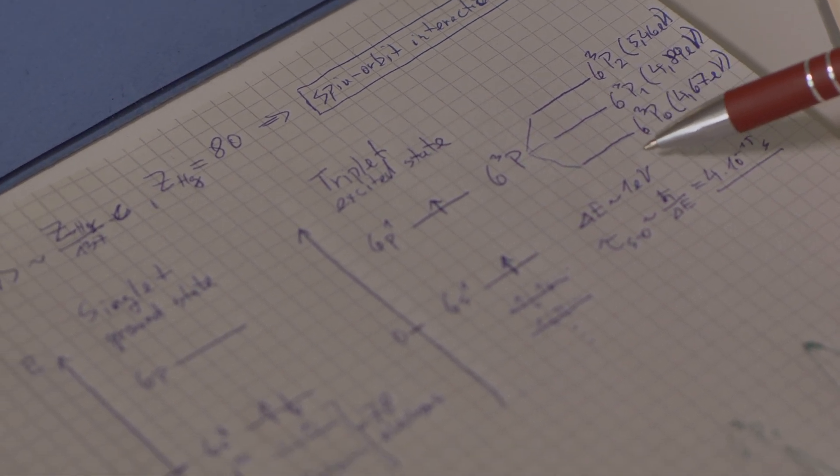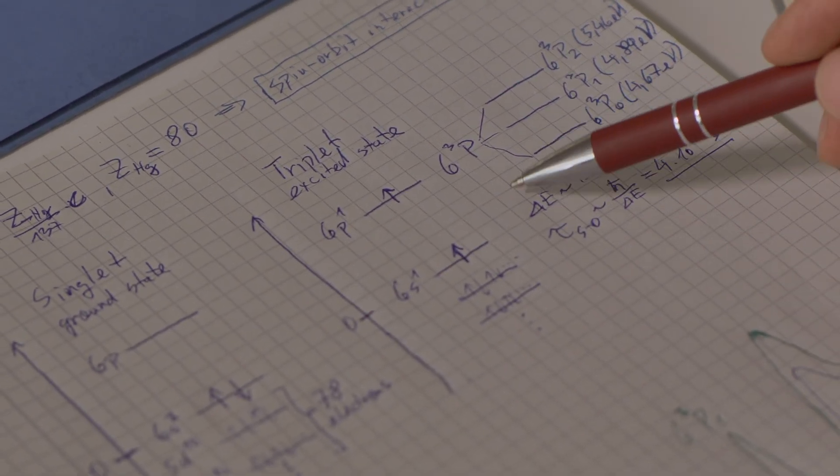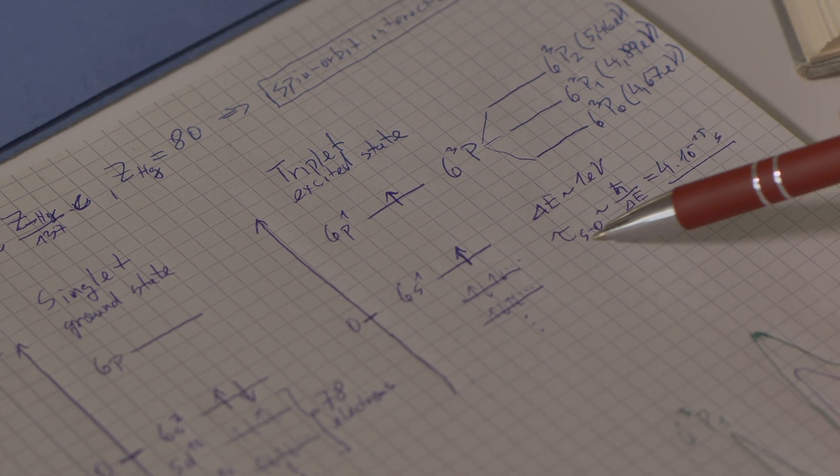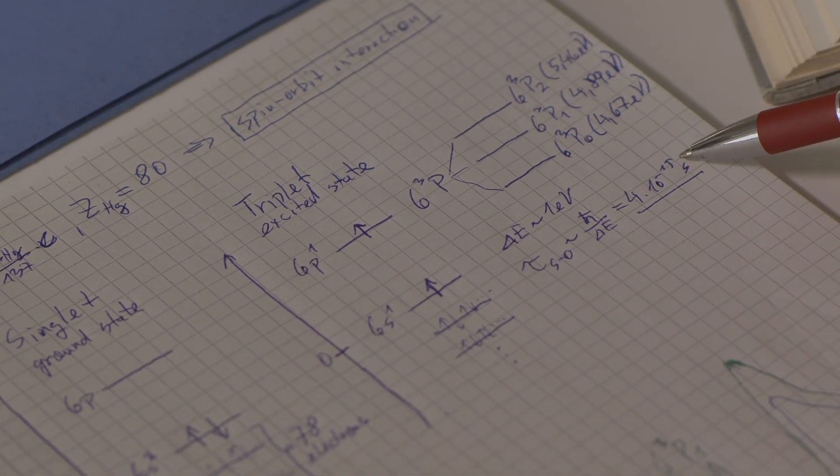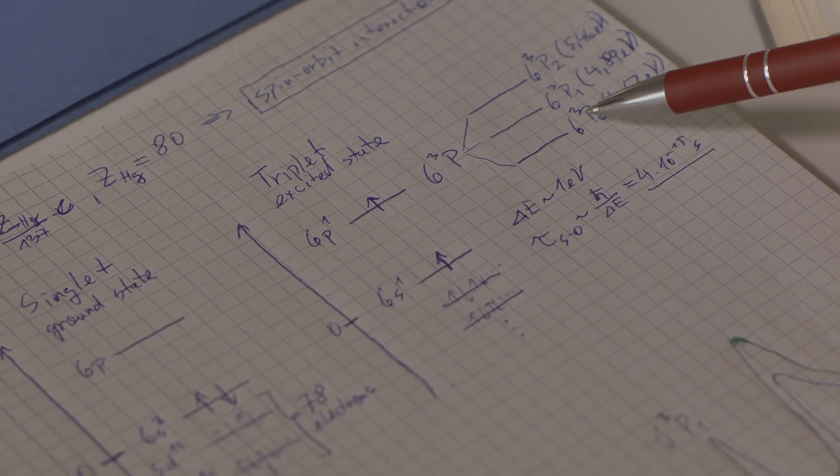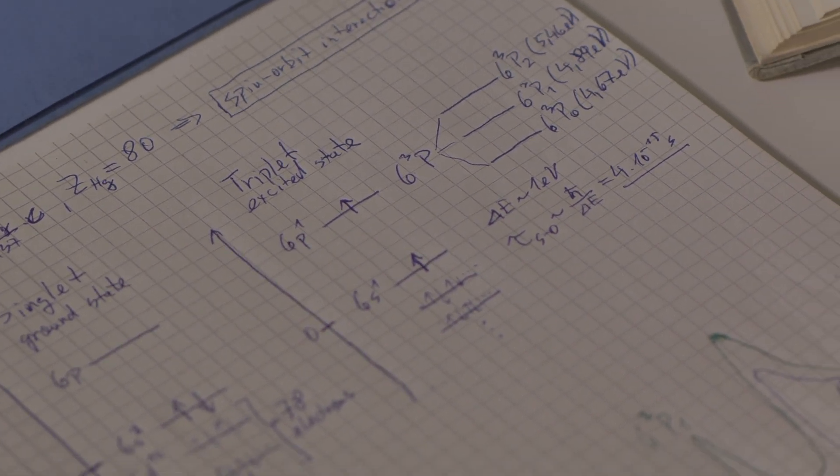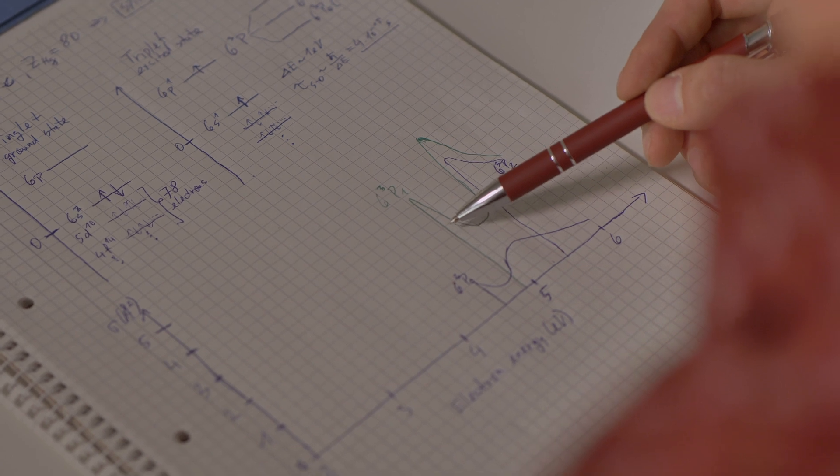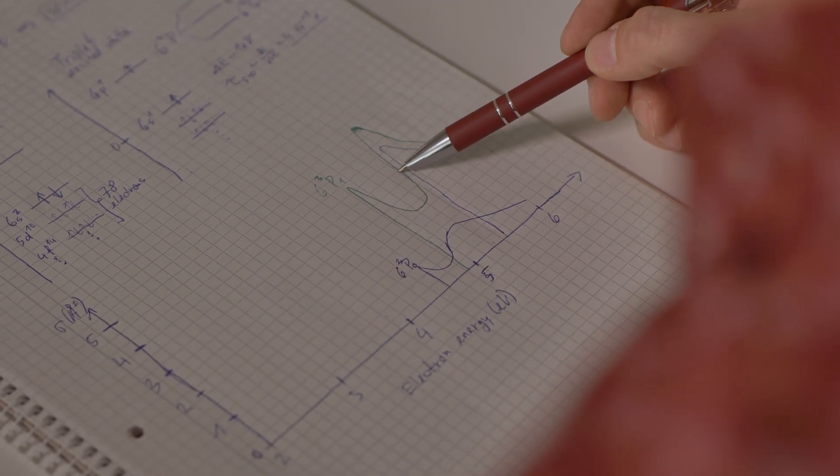The splitting of the states takes place on the ultrafast femtosecond timescale. The lowest state has the energy of 4.67 eV, but the incoming electron excites each of these levels with a different probability. It turns out that the cross-section for the lowest state is the smallest.